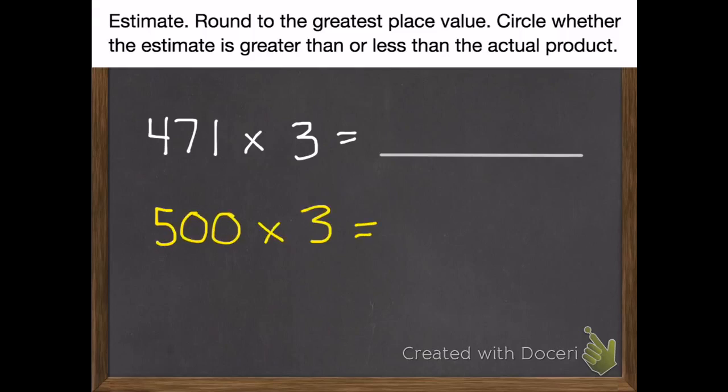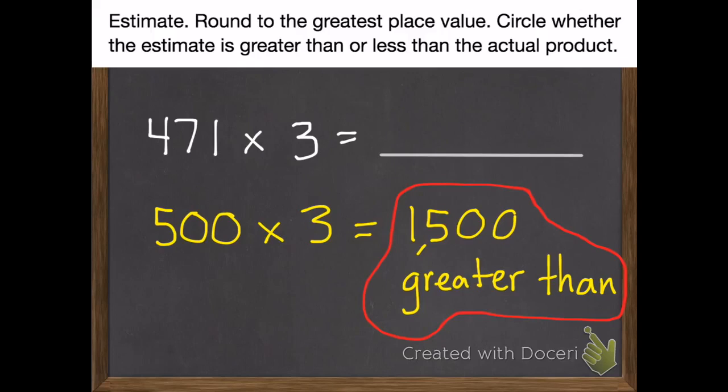Okay. Should have made this 500 times 3, which equals 1,500. And this would be greater than. And I circled it.